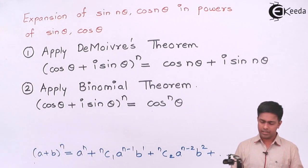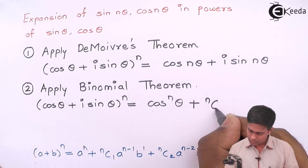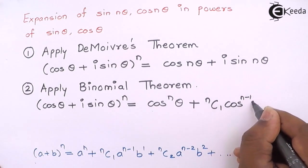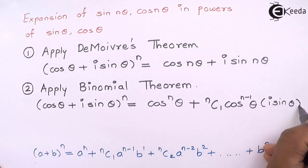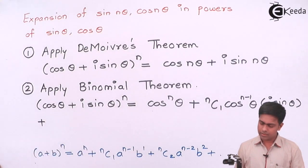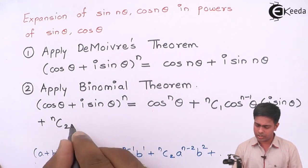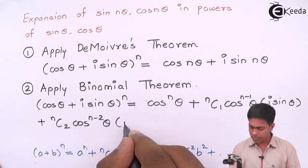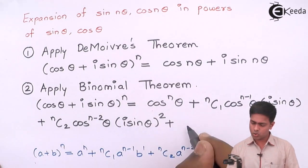Applying the formula with a = cos θ and b = i·sin θ, the expansion becomes: cos^n(θ) + nC1·cos^(n−1)(θ)·(i·sin θ) + nC2·cos^(n−2)(θ)·(i·sin θ)^2 + nC3·cos^(n−3)(θ)·(i·sin θ)^3 + … and so on.